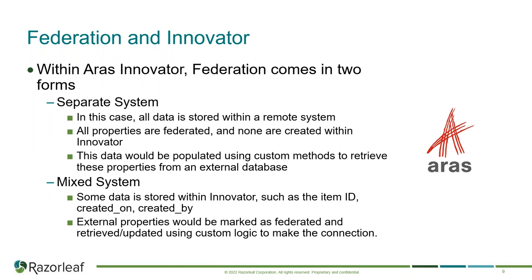Within Innovator, Federation comes in two forms. The first is a separate system federation case, where all data will be stored within that remote system. All properties are federated and none are created or stored within Innovator - they would have to be populated using custom methods to retrieve the properties from the external database. The second is a mixed system federation, where some data is stored within Innovator, such as your item IDs, created on, and created by fields. All external properties would be flagged as federated and then use server methods to either retrieve or update those properties.